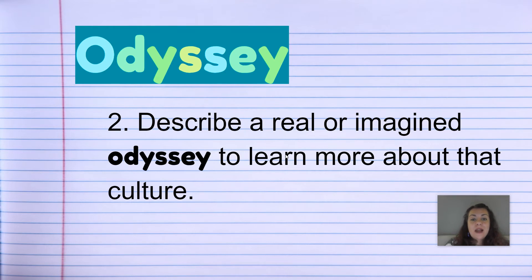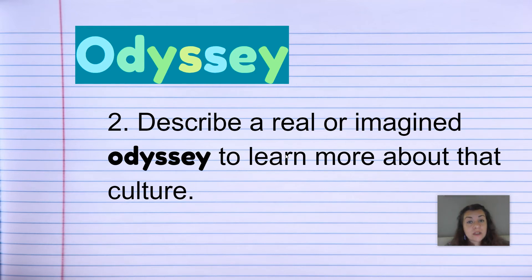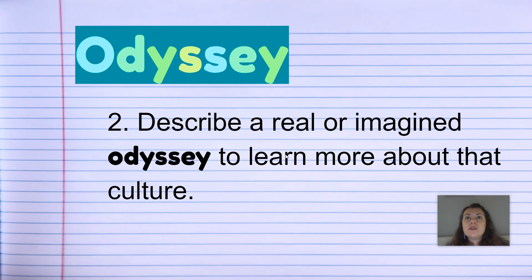Next sentence: describe a real or imagined odyssey to learn more about that culture. I could say, after quarantine is over, I decided I'm going to go on an odyssey and travel through central Europe and down through Africa. I'm not actually going to do that, but it would be awesome. So my odyssey would be traveling by plane and boat and ship through central Europe and then Africa, tracing the path of my ancestors.